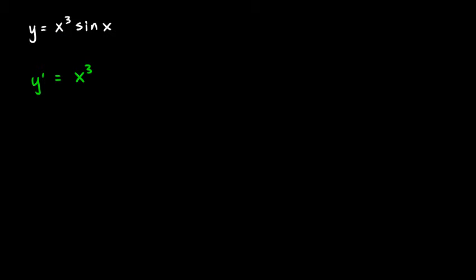So the first is x cubed, and the second is sine x, so the derivative of that is cosine x. That gives us the first times the derivative of the second, plus the second which is sine x, times the derivative of the first, which would be 3x squared. And that's it — you're done.